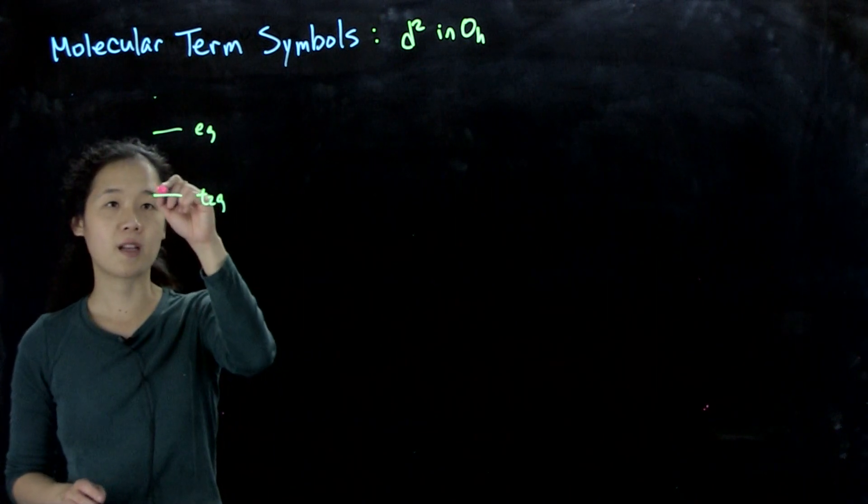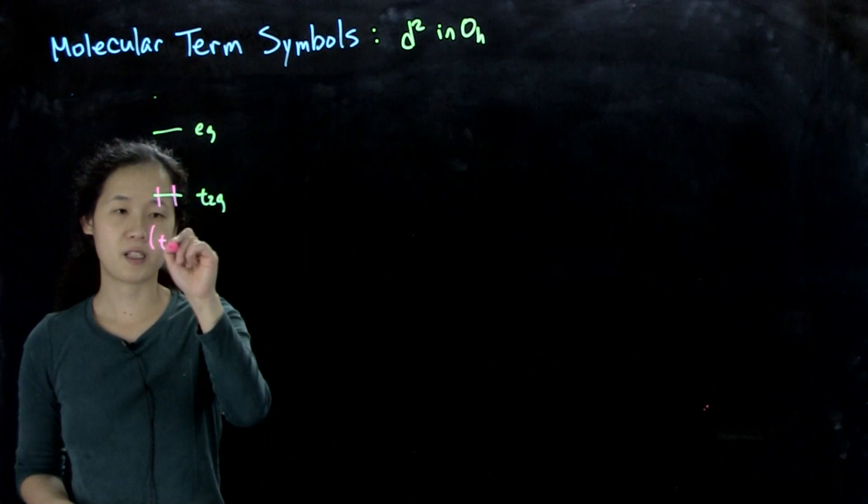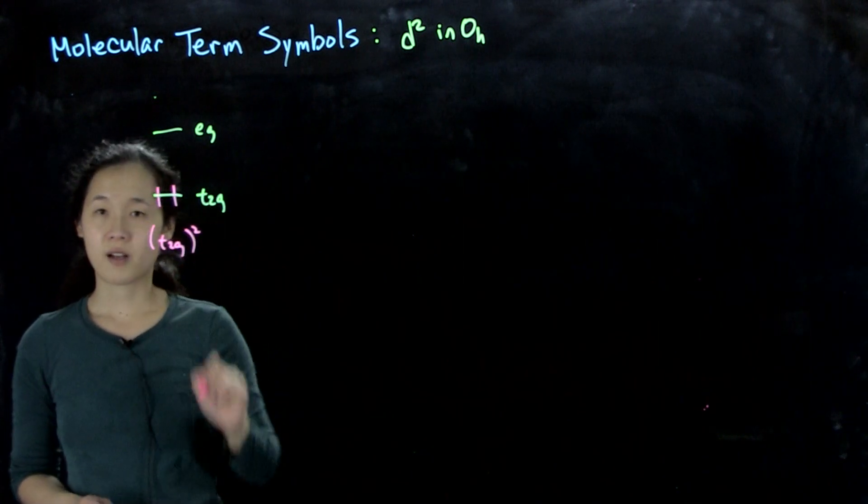So we could have both our electrons down here. I'm not showing states. So configuration, we have two electrons in our t2g orbitals.